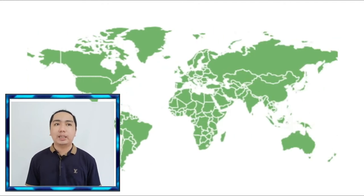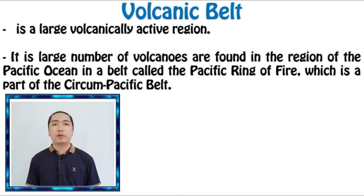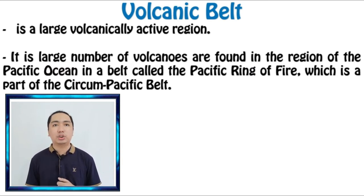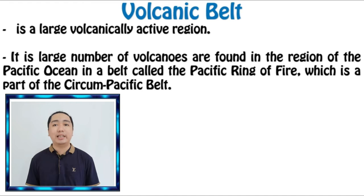When we say volcanic belt, most volcanoes in the world are located along divergent plate boundaries. One of these boundaries is the Mid-Atlantic Ridge, a part of the Mid-Atlantic Belt located on the floor of the Atlantic Ocean from Iceland to Antarctica.